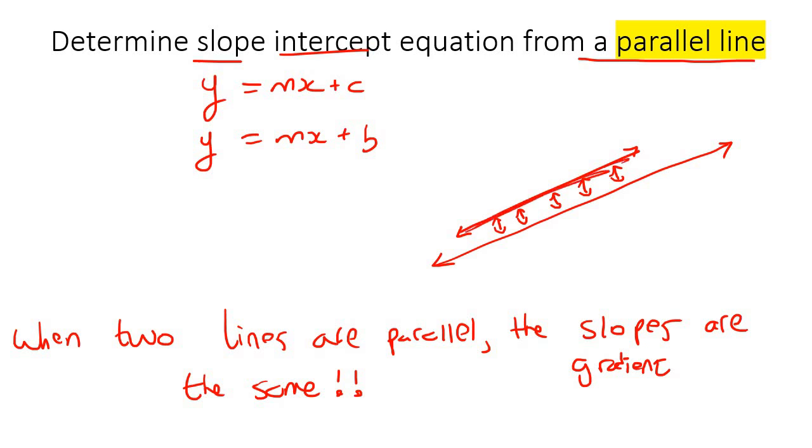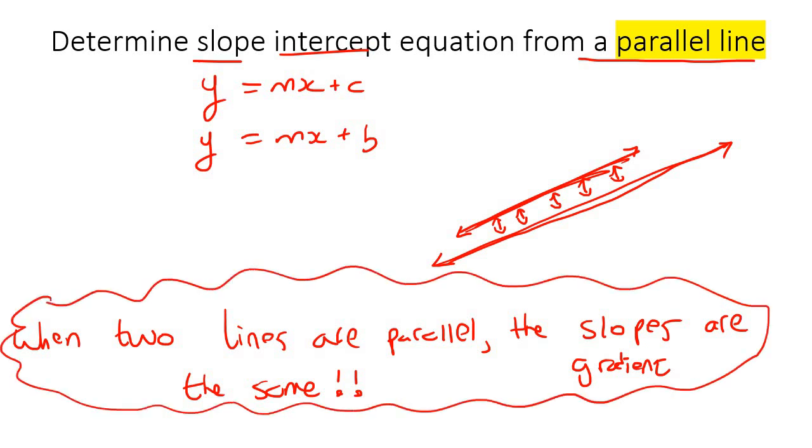When two lines are parallel, we can see that the steepness looks the same. This right here is the absolute key thing that you need to understand. When two lines are parallel, the slopes or the gradient are the same. So let me give you an example, and then we're going to do a few practice questions.